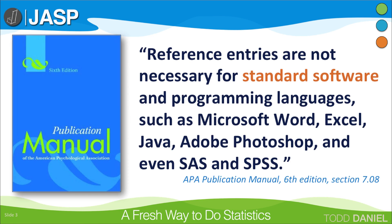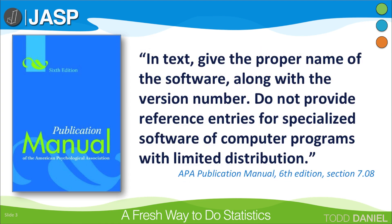According to the sixth edition of the APA Publication Manual, reference entries are not necessary for standard software and programming languages, such as Microsoft Word, Excel, Java, Adobe Photoshop, and even SAS and SPSS. In text, give the proper name of the software along with the version number.